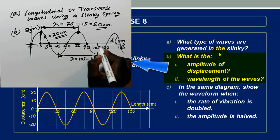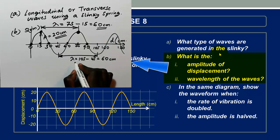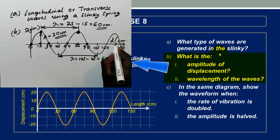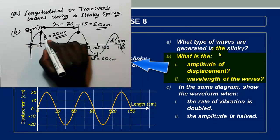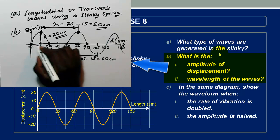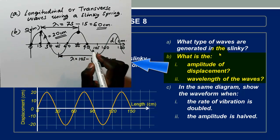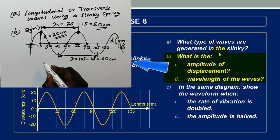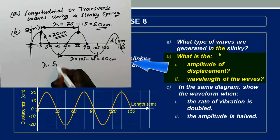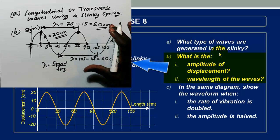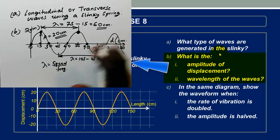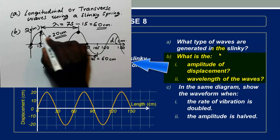There are many methods to determine the wavelength from a displacement-position graph: look for two adjacent crests, two adjacent troughs, or two corresponding equilibrium positions and measure that distance. You can also use the equation wavelength equals speed divided by frequency, but for this question the graphical method is most appropriate.